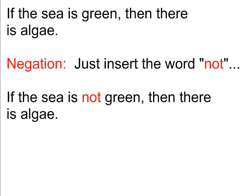Negation. I started out with a statement, and then I do the negation so you have something to compare against. Above, the statement is: if the sea is green, then there is algae. The negation: you just insert the word 'not.' So now it's: if the sea is not green, then there is algae. That's negating it.